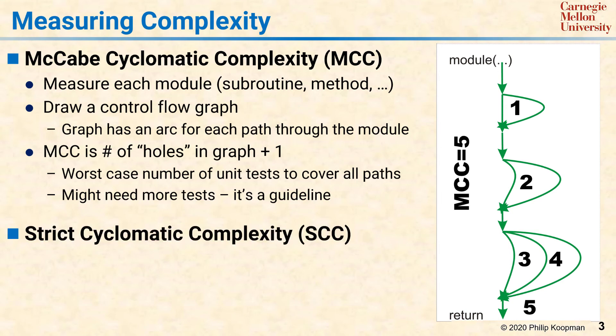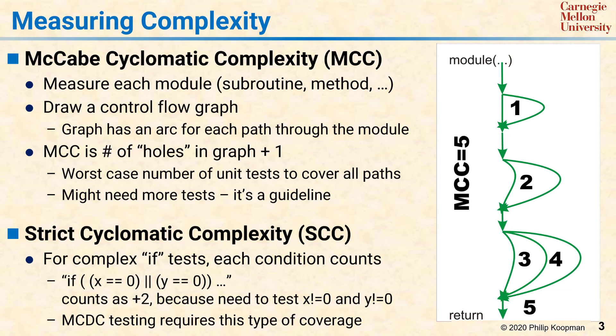A related metric is called strict cyclomatic complexity, or SCC. This differs from MCC in that it looks inside the conditions for an if statement. If there are multiple conditional elements that might need to be tested separately, a higher score is assigned. For example, an if statement with a condition of either x equals zero or y equals zero would need to be tested for both possible conditions, resulting in an SCC score of plus two for that compound condition. A type of testing coverage called modified condition decision coverage, or MCDC, requires this level of testing.